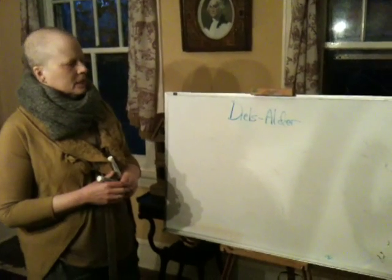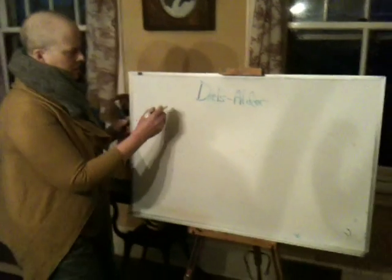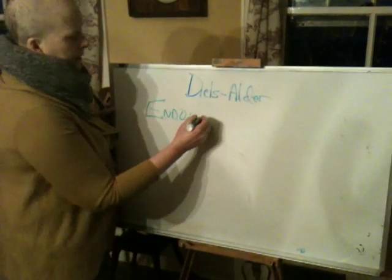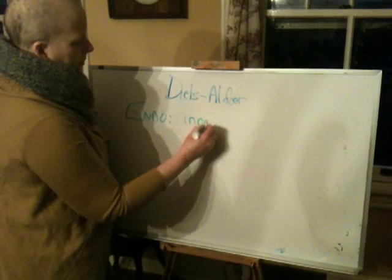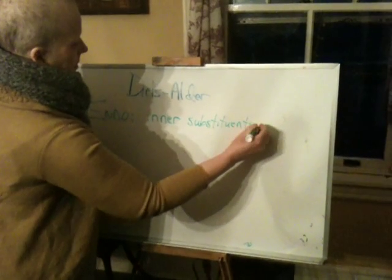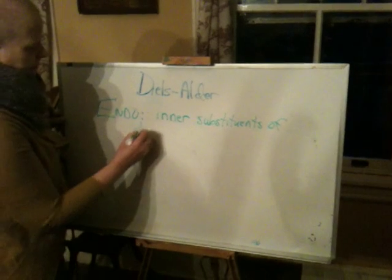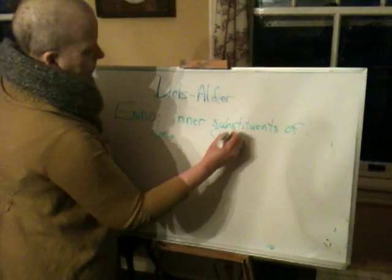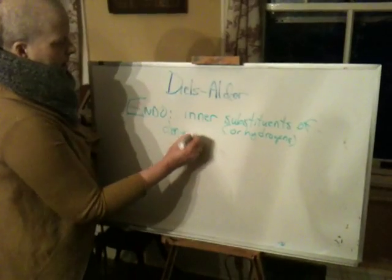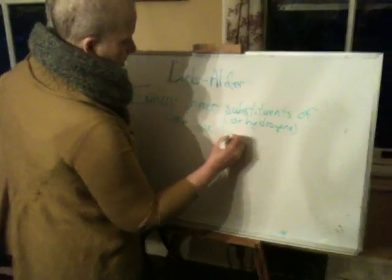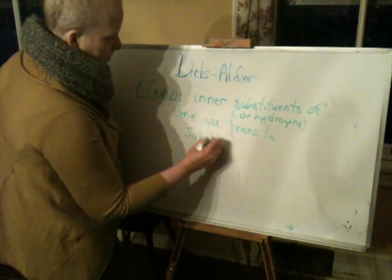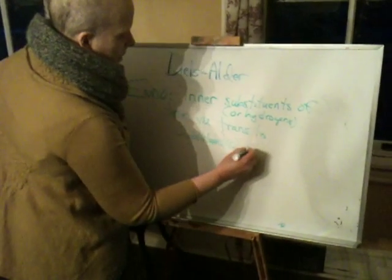First of all, let's go back and redefine what we mean by endo. Endo is when the inner substituents of the diene — and these could be substituents or hydrogens, that's important — are trans to the substituents on the dienophile.